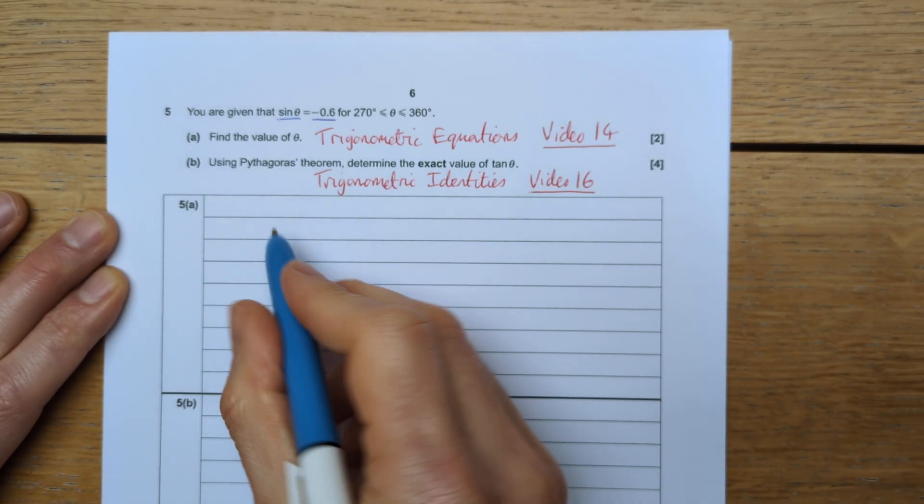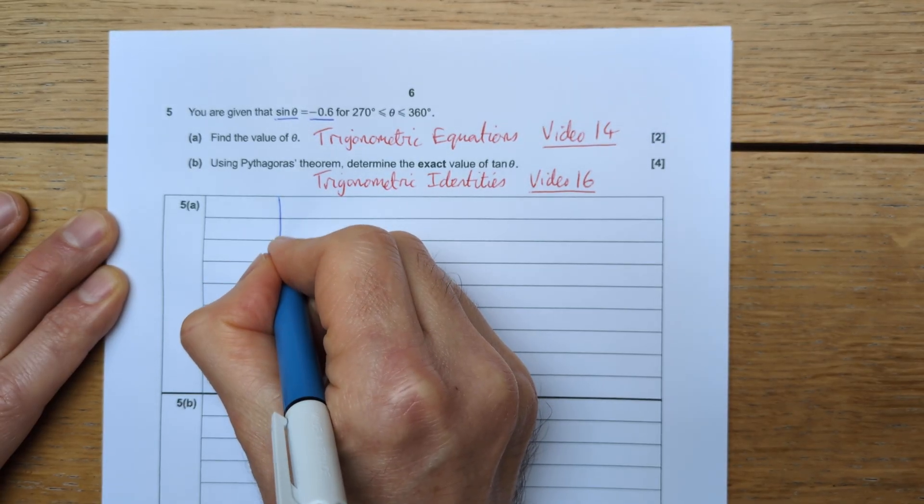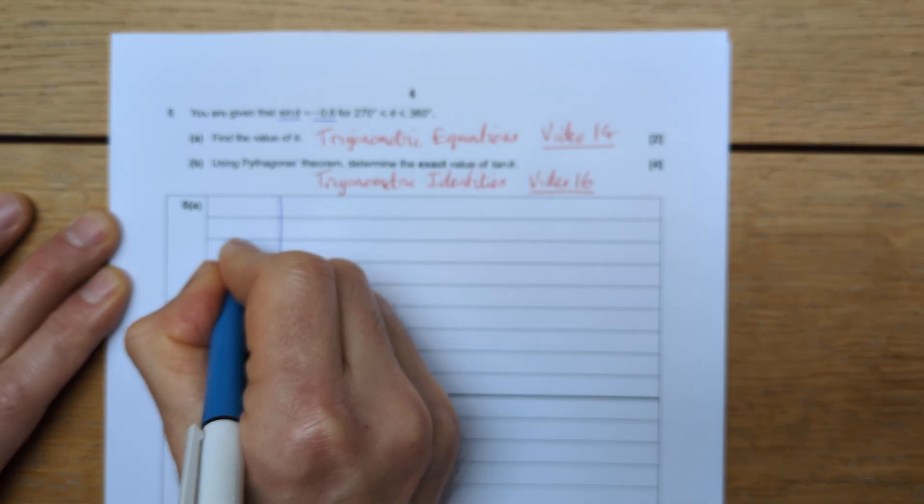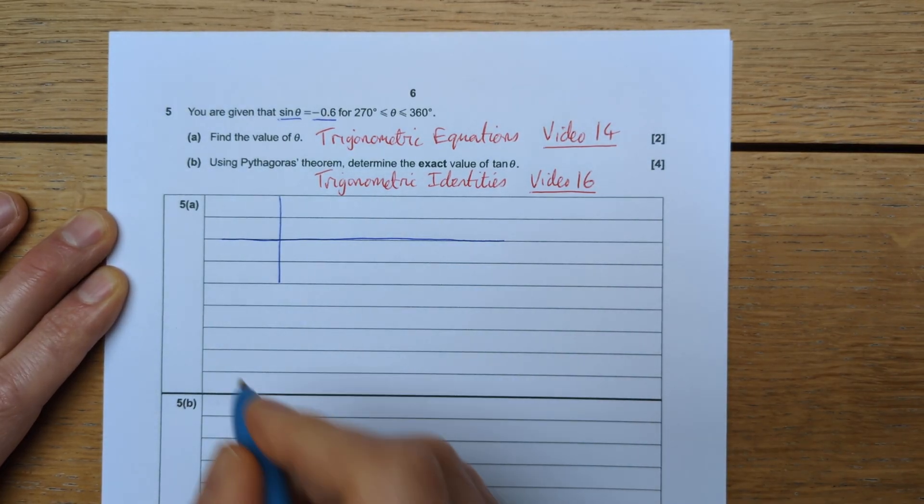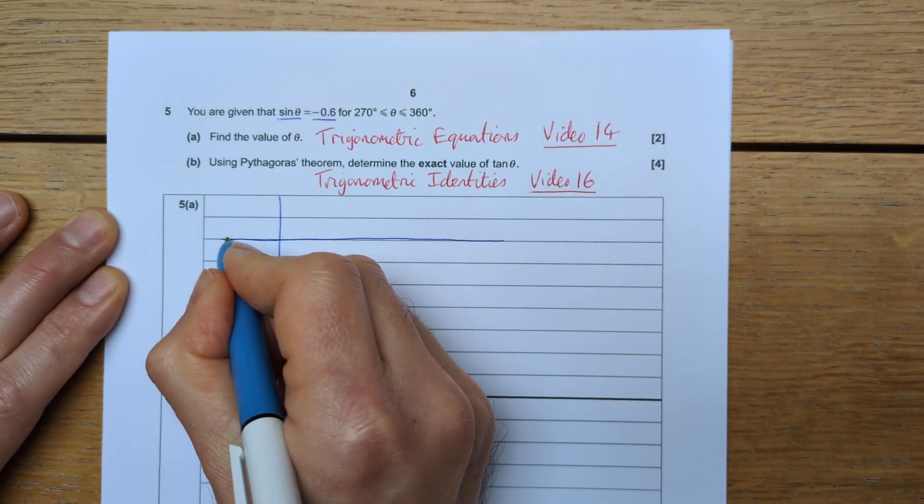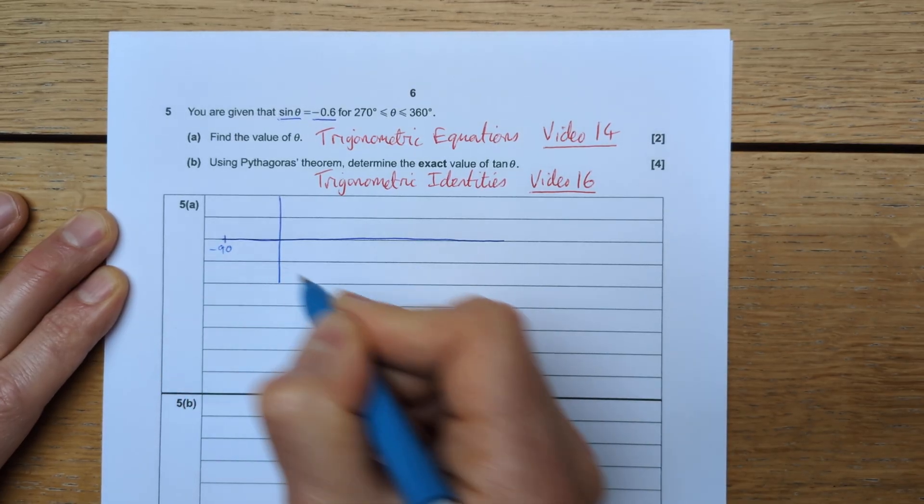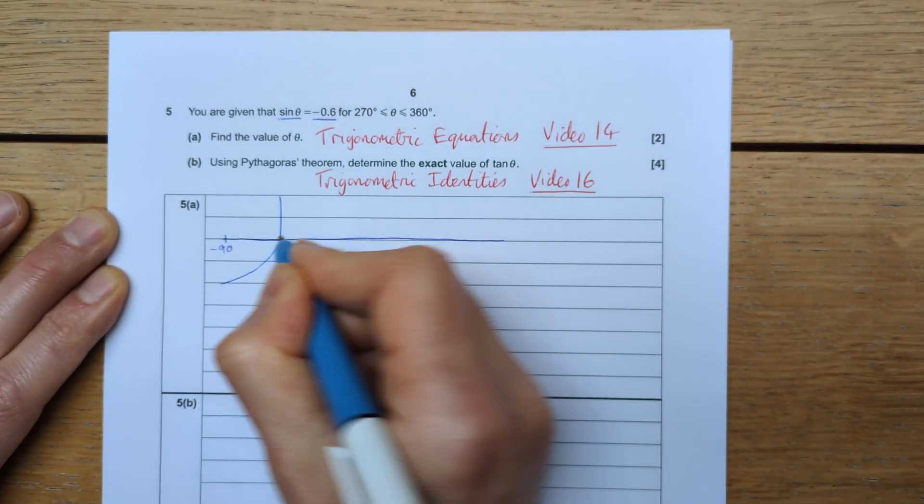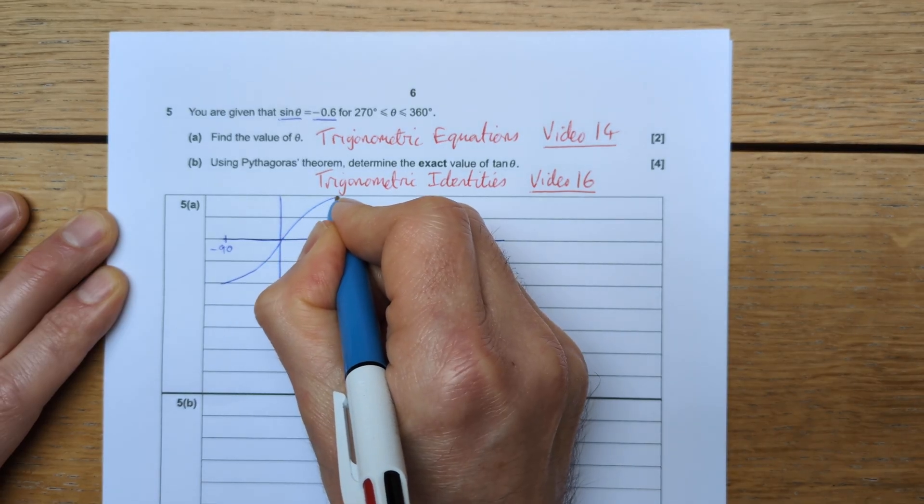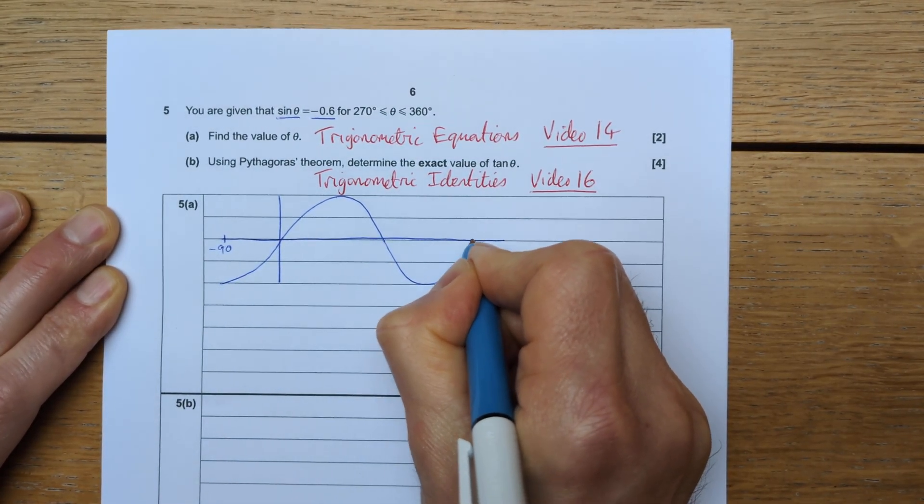So the first thing I would do in a simple trigonometric equation is sketch my trigonometric function. I'm going to draw the graph of sine theta between negative 90, just to give a sense of where it will be, through 90, 180, 270, and 360.